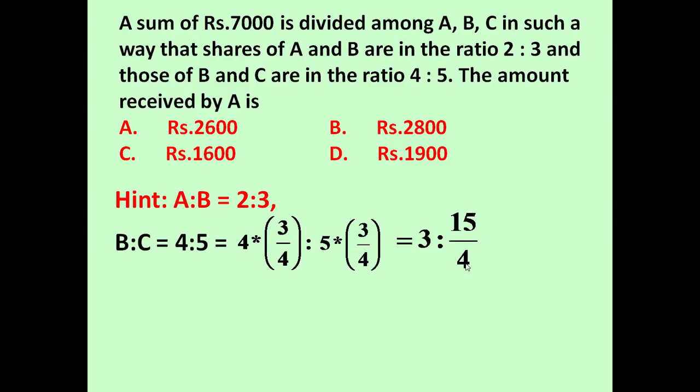So this will become 3:15/4. So now we can write A:B:C equals - A:B is 2:3, in both cases B is 3, and C is 15/4.